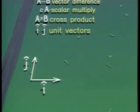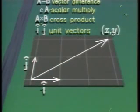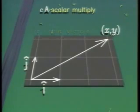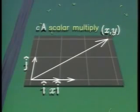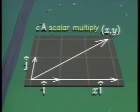The vector from the origin to the point with coordinates x, y is the sum of two perpendicular vectors, a horizontal vector x i and a vertical vector y j.